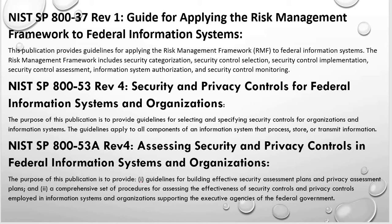NIST SP 800-37 Revision 1 is the Guide for Applying the Risk Management Framework to Federal Information Systems. The RMF steps — categorization, selection, implementation, assessment, authorization, and monitoring — are found in this publication. If you want a guide on how to implement and apply the RMF steps, reference NIST 800-37 Revision 1.